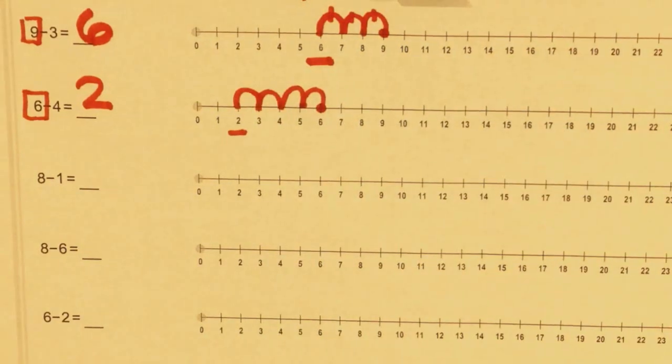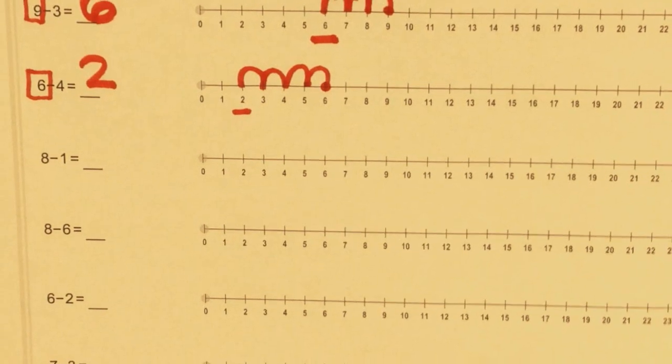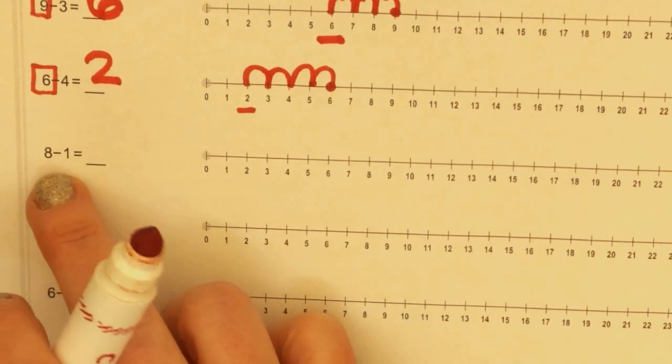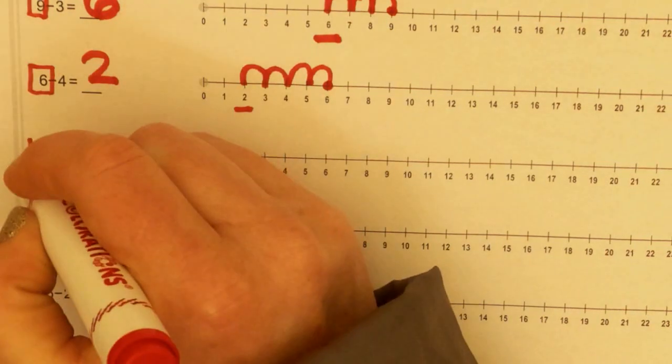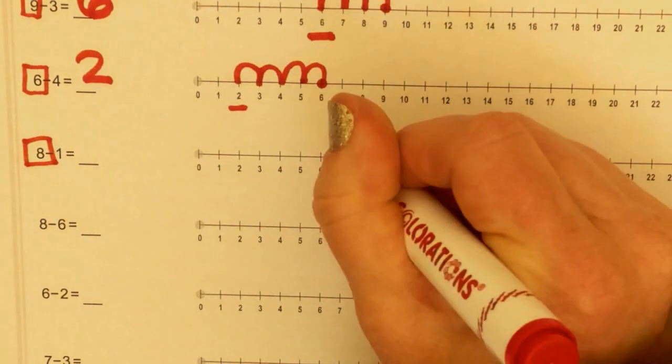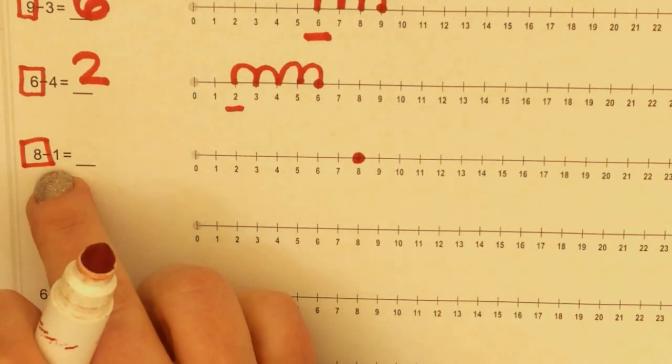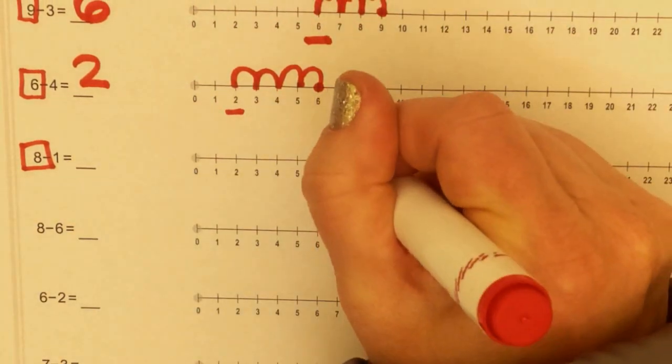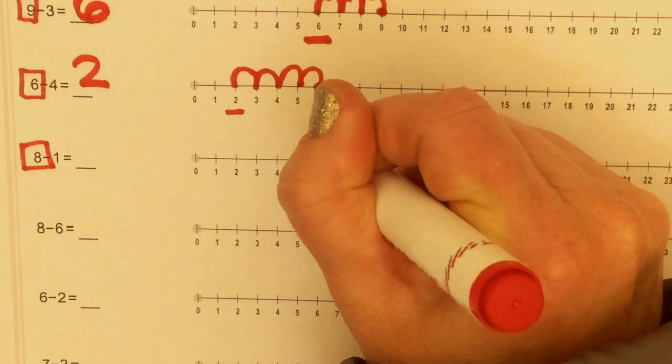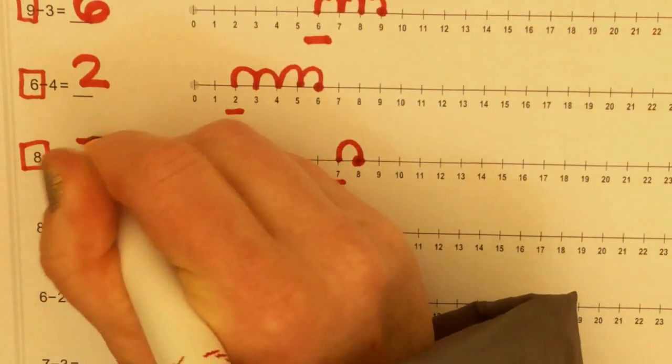Alright, I'm going to model one more for you, and then you guys are going to rock and roll on your own. Alright, let's check out 8 minus 1 equals something. 8 is my start number. Draw a dot on 8. 1 is my hop number. Draw one hop. One hop. And I landed on 7.